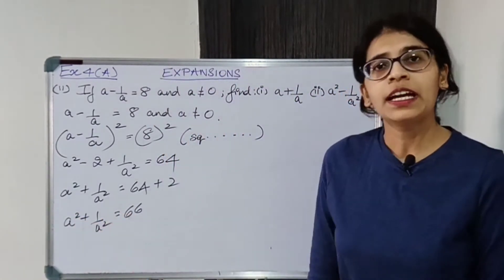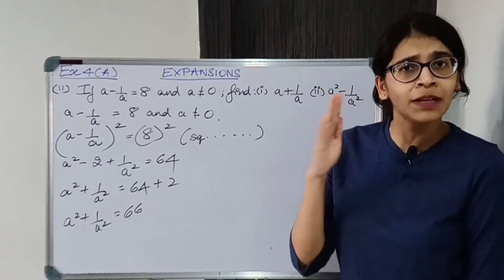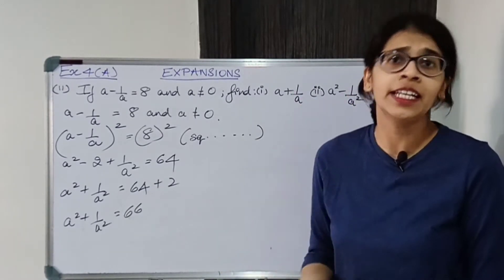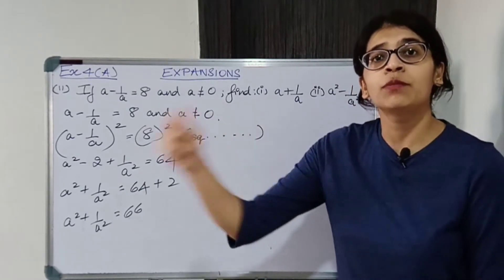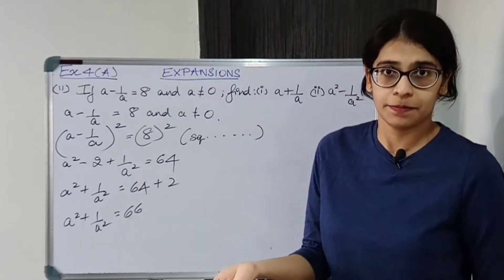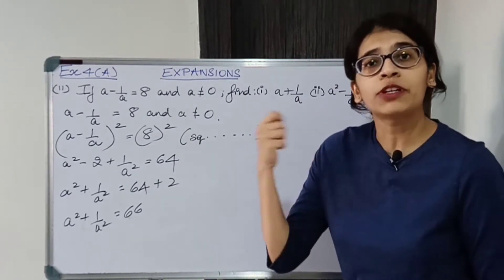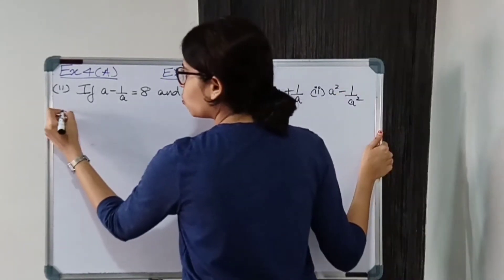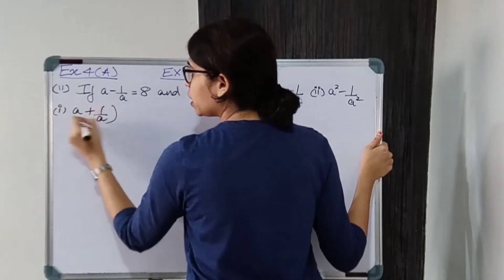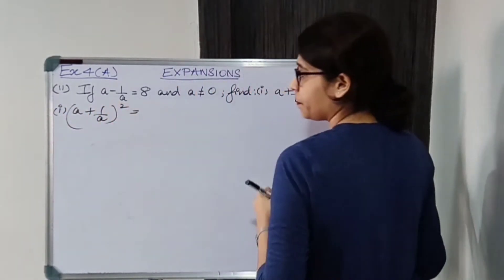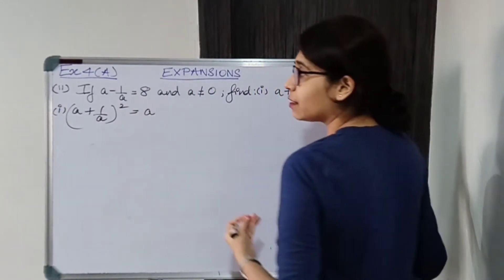Now this is all we can get from that. We have to find A plus 1 upon A. Can we find A plus 1 upon A directly? Do I have an identity for that? No. So what we will do, we will find A plus 1 upon A the whole square instead. So let us find A plus 1 upon A the whole square — use the identity and expand it.